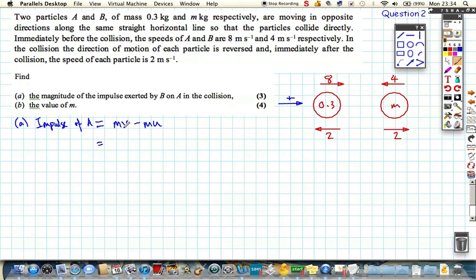So the mass is 0.3. The final velocity is minus 2 because it's acting in the left-hand direction, so it's negative. And the mass is 0.3 again. Initial was 8. So we get minus 0.6 minus 2.4, which is equal to minus 3 newton seconds.